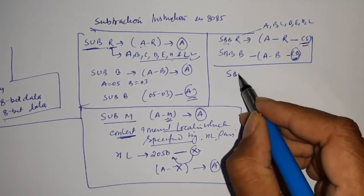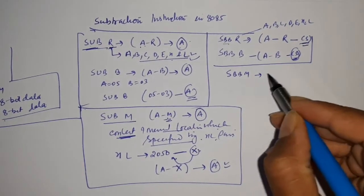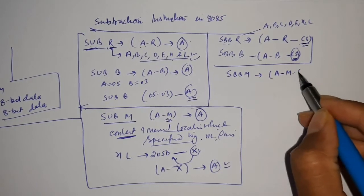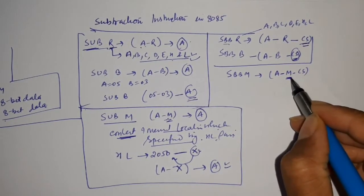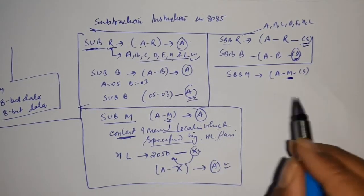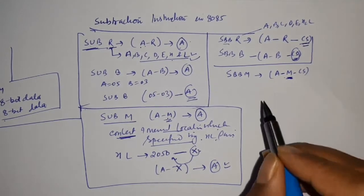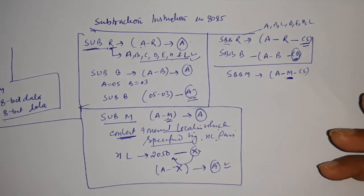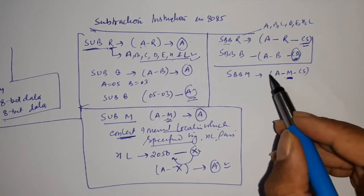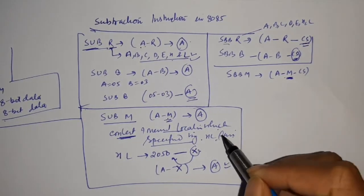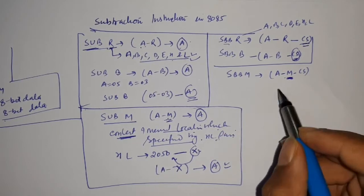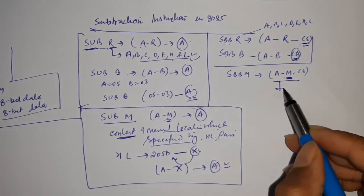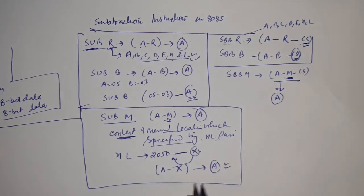The next instruction is SBB M. The meaning of this will be the same: A minus M minus carry flag (borrow). The value of M is the content of the memory location which is specified by the HL pair. The output will be stored in the accumulator.